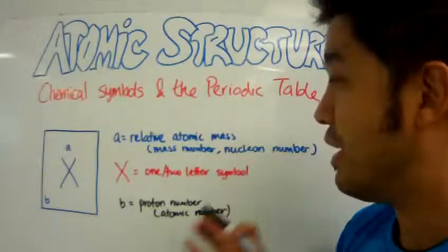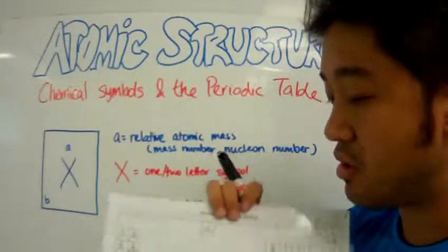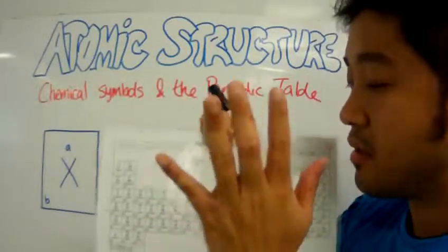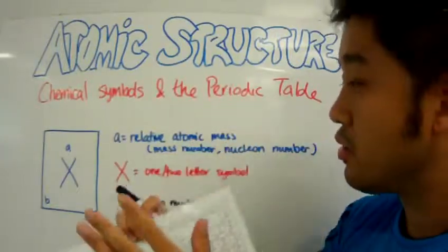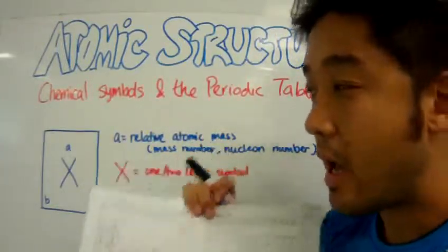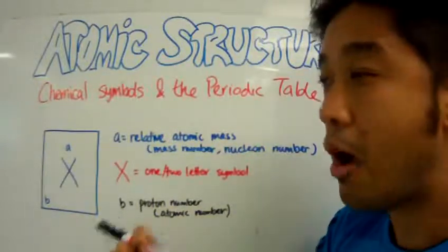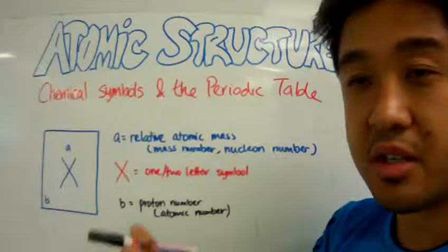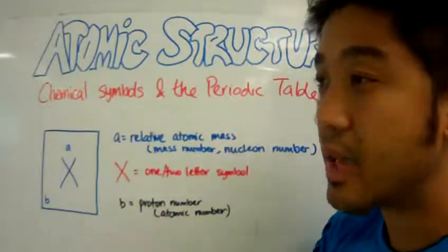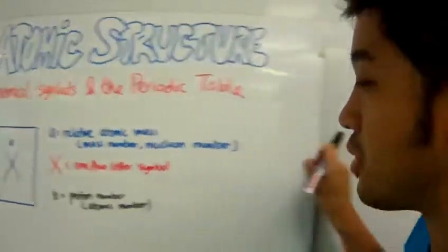So let's get right down into how to relate the symbols on the periodic table to the structure of the atom and also determining how many protons, electrons, and neutrons there are in that atom. Let's get down to it.